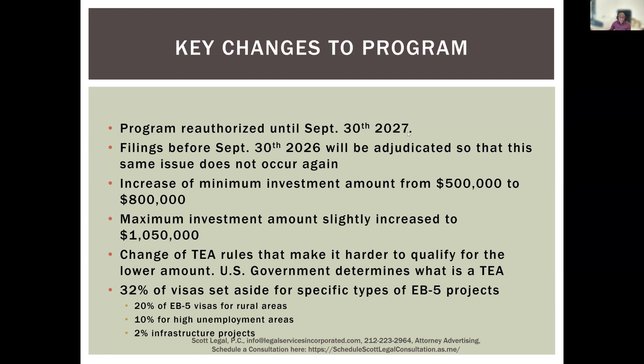Through changes to the program in March 2022, the regional center program was reauthorized until September 30, 2027. Filings before September 30, 2026 will be adjudicated — this was a big fix from last time when the program stalled and USCIS didn't know whether they could continue to adjudicate, so they just stopped. In terms of investment amounts, the lower amount was previously $500,000 and was increased to $800,000. The higher amount used to be $1,000,000 and was only increased to $1,050,000.